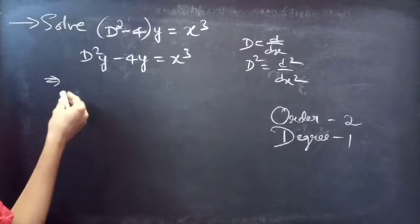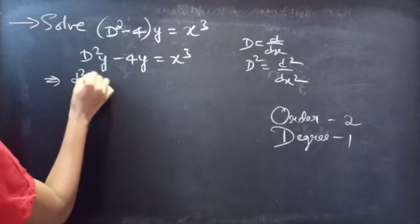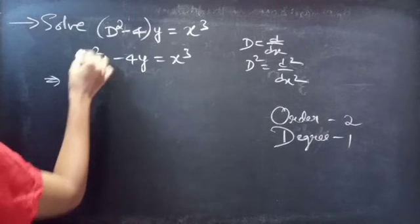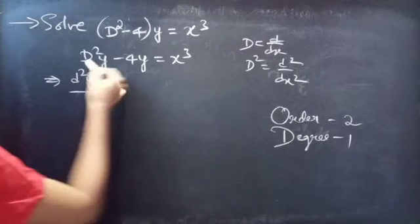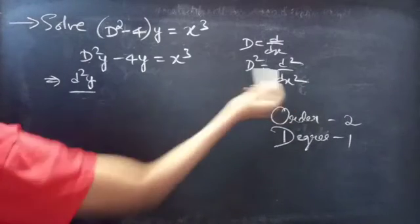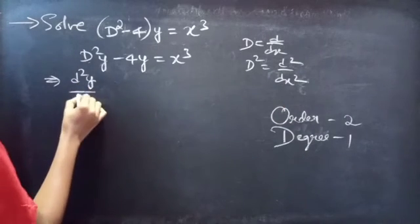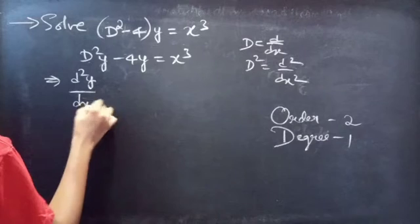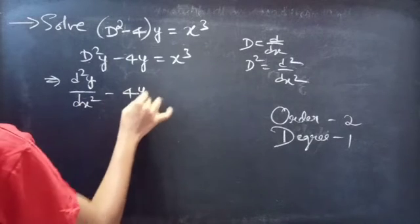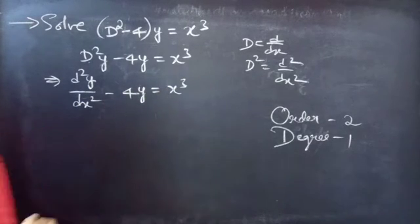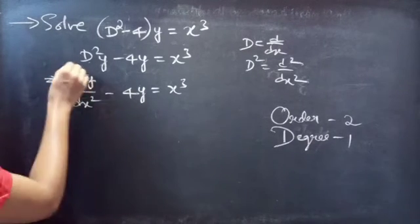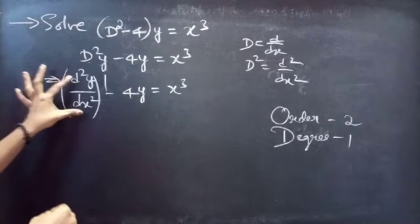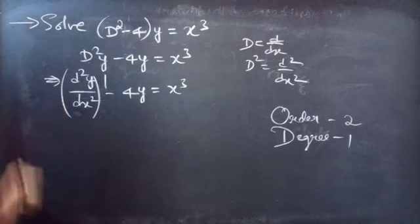We write the given differential equation as D squared y. Replacing D squared by d squared by dx squared, we get d squared y by dx squared minus 4y equals x cubed. Here, d squared y by dx squared is the highest derivative, so the order is 2. And the highest power of the highest derivative is the degree, so degree is 1.